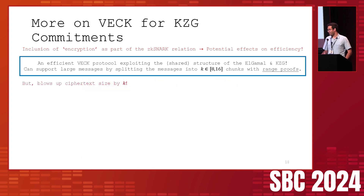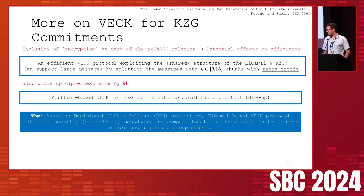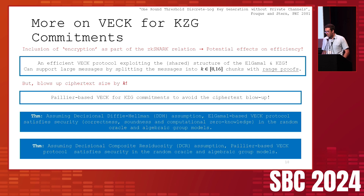Unfortunately, this chunking step blows up the ciphertext size by a factor of k (8 or 16). To address this, we designed another VEC scheme based on Paillier encryption, which avoids the ciphertext blowup by a factor of k — at least theoretically. We proved security for both schemes: the ElGamal-based VEC satisfies correctness, soundness, and computational zero knowledge under the Decisional Diffie-Hellman assumption in the random oracle and algebraic group models. Similarly, the Paillier-based VEC is proven secure under the Decisional Composite Residuosity (DCR) assumption in the random oracle and algebraic group models.